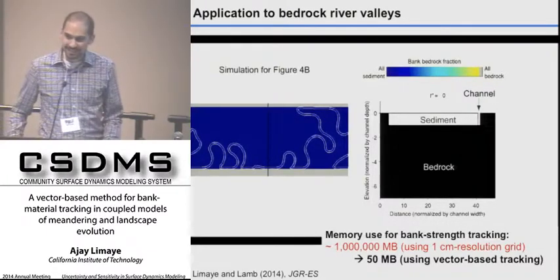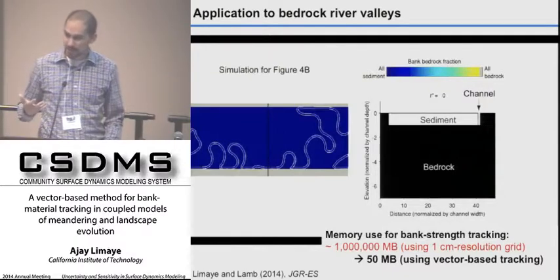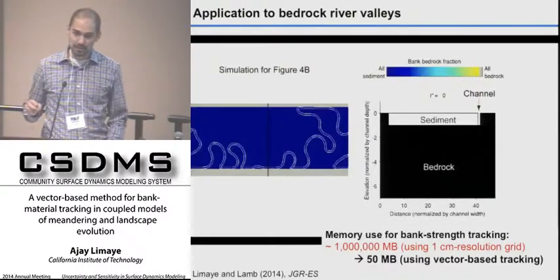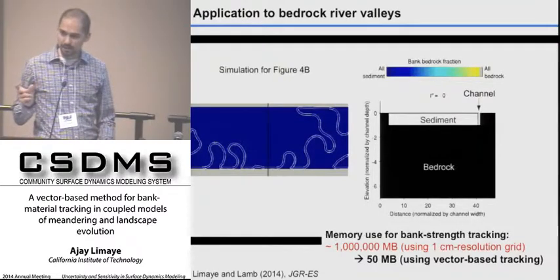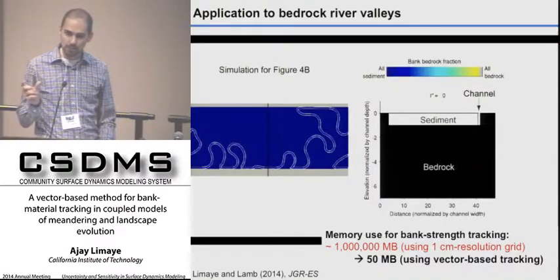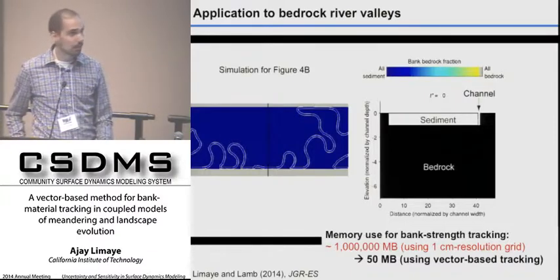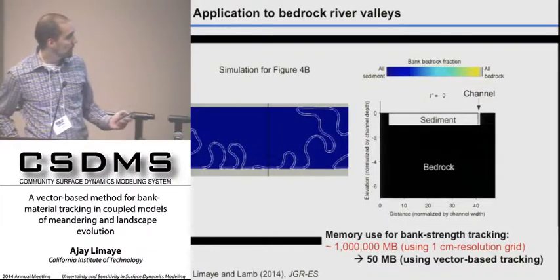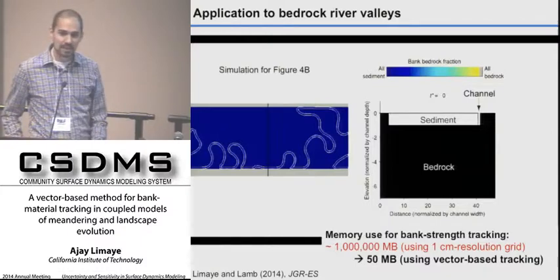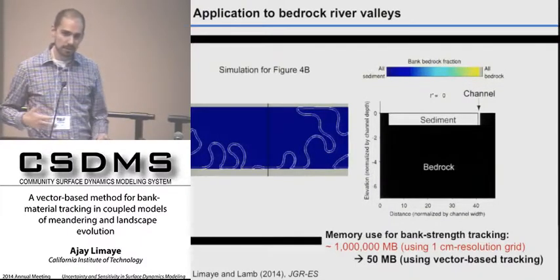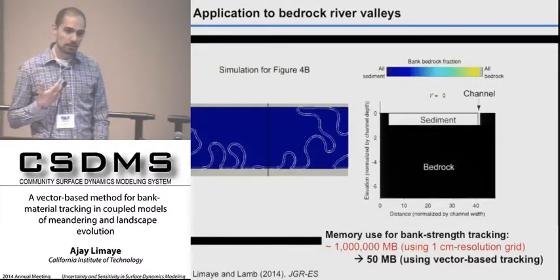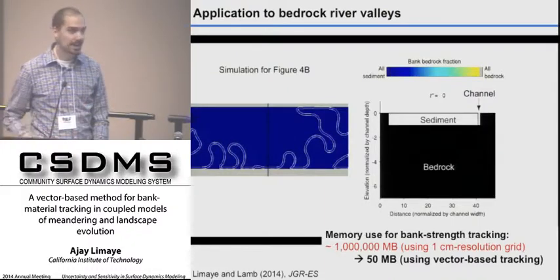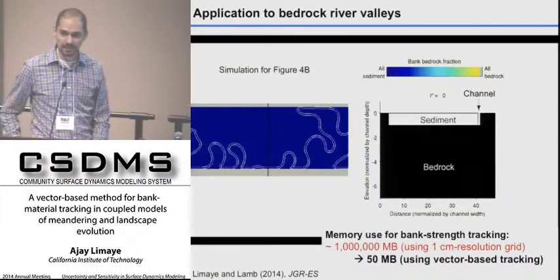A key result is the memory use comparison between a grid-based approach and the present vector-based approach. Tracking bank strength with a grid at resolution sufficient to track one centimeter per year of channel erosion in bedrock would require on the order of terabytes to represent the landscape. For an equivalent simulation of bedrock river valley evolution over several tens of thousands of years, the vector approach tracks bank material properties using only about 50 megabytes of data.